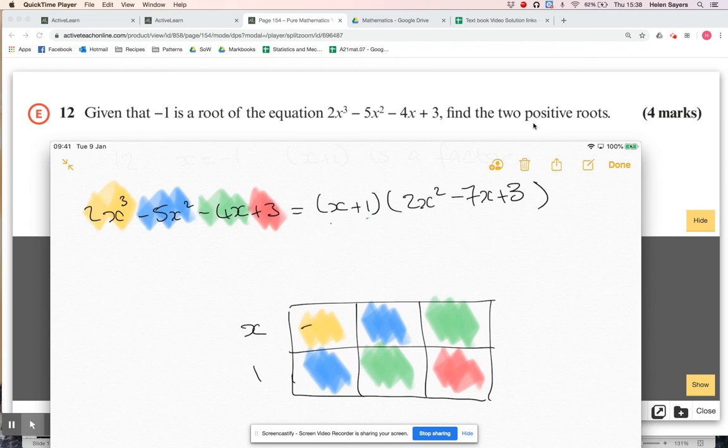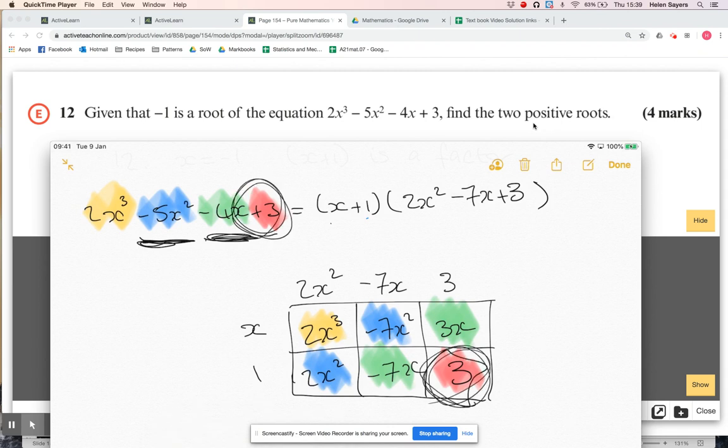My x³ term is supposed to be 2x³, so that must be 2x². I need -5x², so I need -7x² so they add up to -5x². So that would be -7x. -7x times one gives me -7x. My x term is supposed to be -4x, so I need 3x there. So that would be 3. That three times x gives me 3x, and if that's three, that would be three. That last bit is just to check because those should equal the same thing since x plus one was a factor.